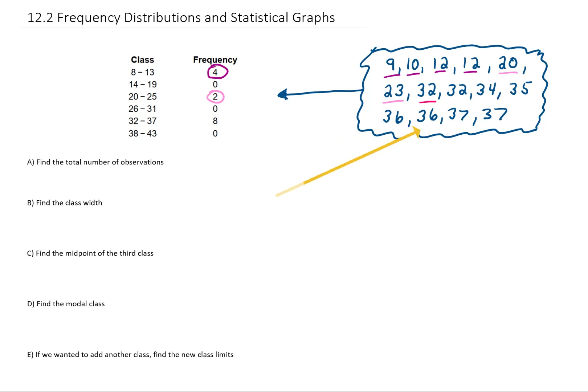And we have 8 pieces of data that fall between 32 and 37, so we have the number 8 right here. So this data is pretty nicely organized by this table.